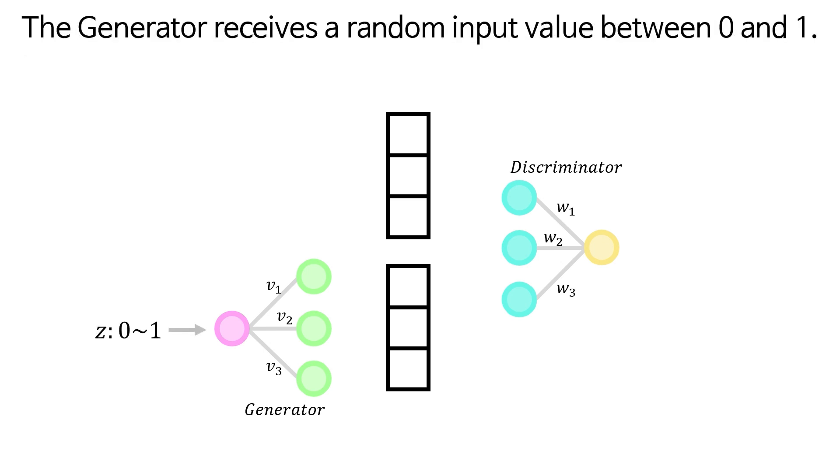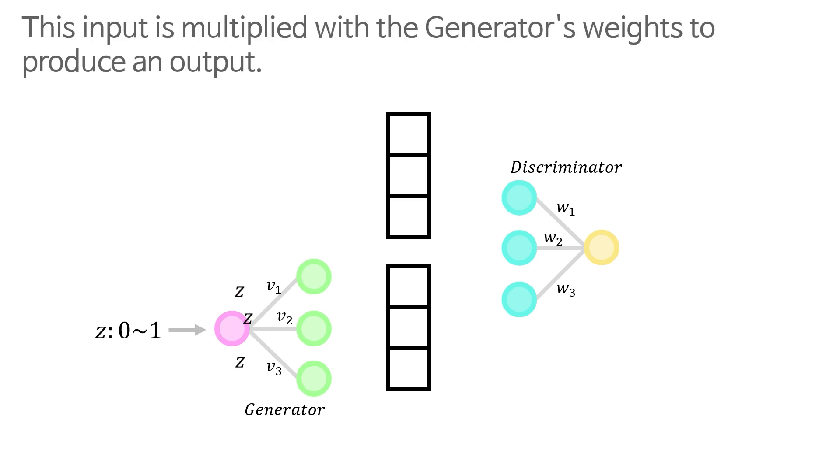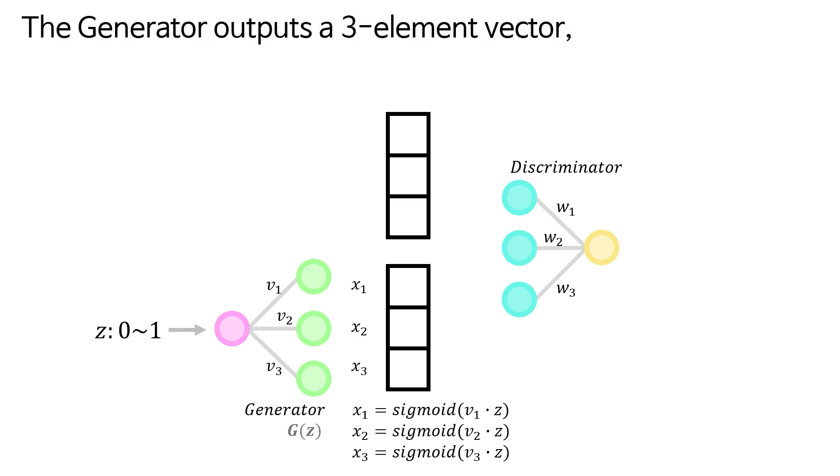The generator receives a random input value between 0 and 1. This input is multiplied with the generator's weights to produce an output. The generator outputs a three element vector, which means representing RGB color.